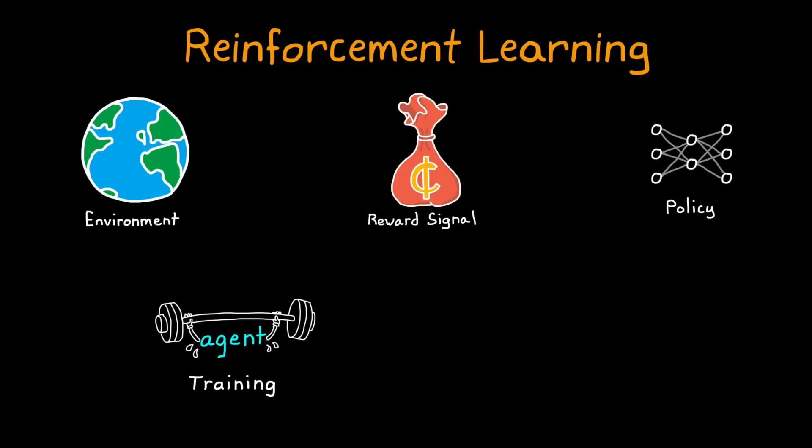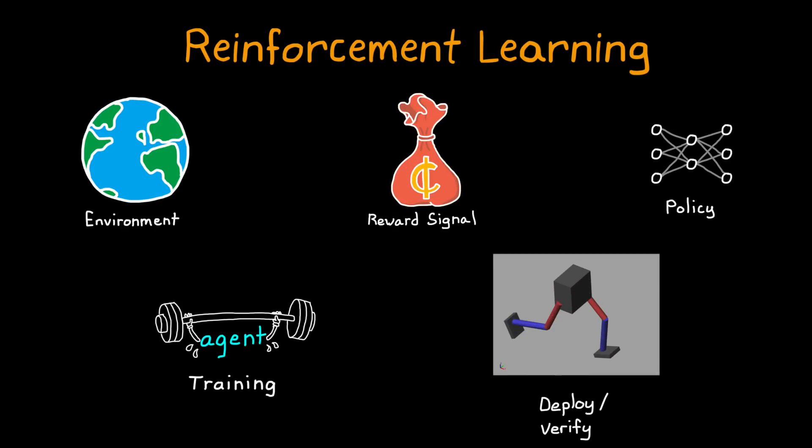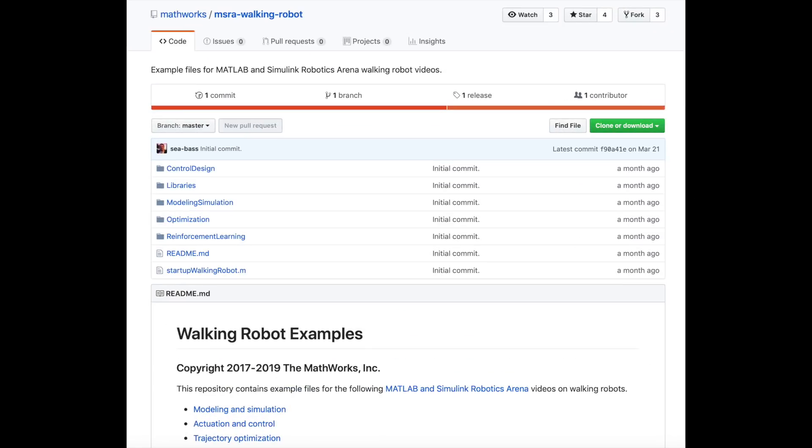Now that we have an understanding of the reinforcement learning workflow, in this video I want to show how that workflow is put to use in getting a bipedal robot to walk using an RL equipped agent. We're going to use the walking robot example from the MATLAB and Simulink Robotics arena that you can find on GitHub. I've left a link to it in the description.